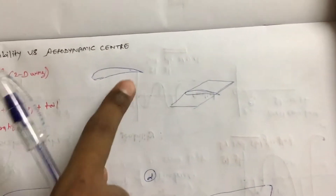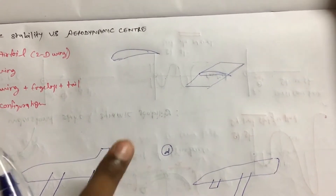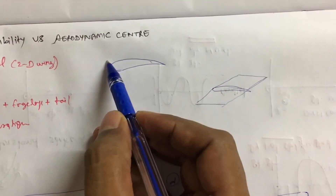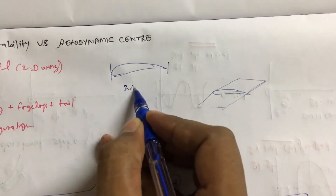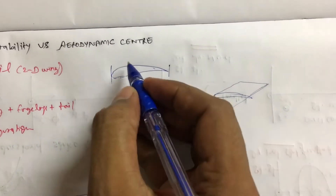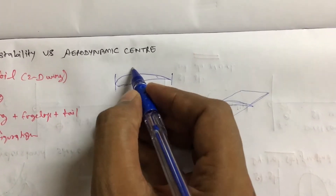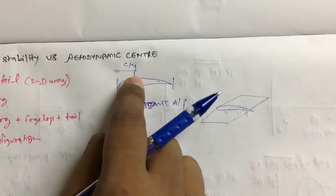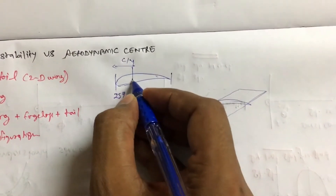In all these four basic designs, we will discuss their stability according to the location of the aerodynamic center. If this is a subsonic airfoil, its aerodynamic center will lie at C/4 — where C is the length of the chord. So C/4 means 25% of the chord, and the AC will lie somewhere here.